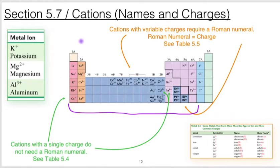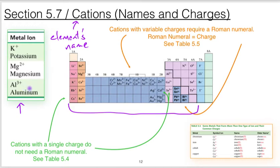First let's look at the cations. The basic thing to know about cations is that we're just going to use the element's name — there's no change in the name: potassium, magnesium, aluminum. This group, shown in green, represents what I call well-behaved elements — they don't vary in charge. For example, sodium is always plus 1, strontium is always plus 2, aluminum is always plus 3. For this group, you simply use the element's name when referring to them in a salt formula.